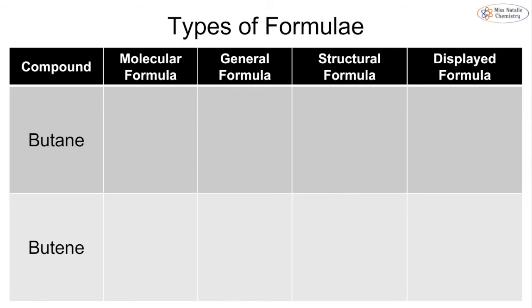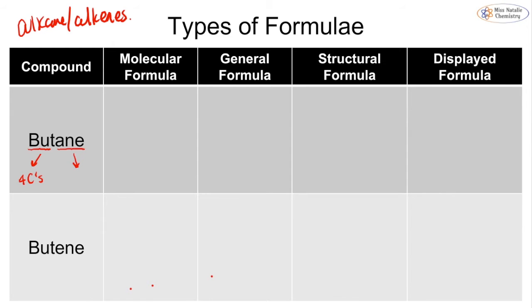Let's look at an example using butane and butene — we'll meet these molecules properly when we cover alkanes and alkenes later. Butane is split into two parts: 'but' tells us there are four carbons, and 'ane' tells us there are single bonds only, because this is an alkane.